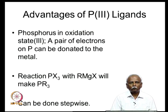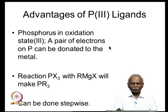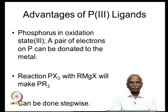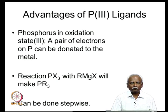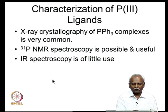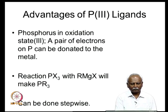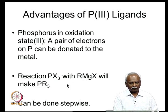There are some distinct advantages to phosphorous(III) ligands. First of all, it is a good sigma-donating ligand, because phosphorous in oxidation state 3 has a pair of electrons that can be donated to the metal. Also, phosphorous(III) ligands can be varied extensively — contrary to carbon monoxide, which cannot be changed, you can change the R group attached to phosphorous. You can react PX₃ — where X is a halogen — with a Grignard reagent to make PR₃ molecules.